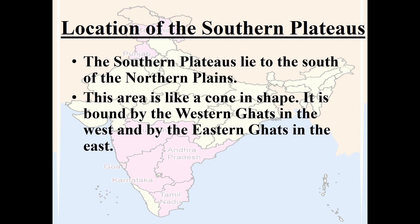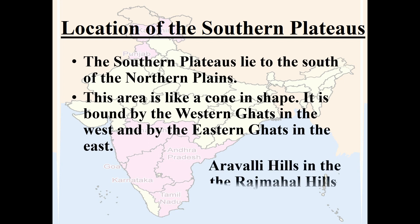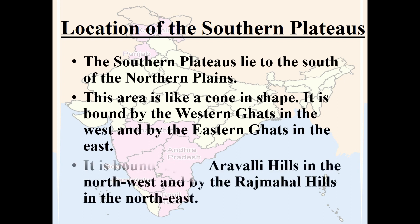This area is like a cone shape. It is bound by the Western Ghats in the west and by the Eastern Ghats in the east. It is bound by the Aravalli Hills in the northwest and by the Rajmahal Hills in the northeast.